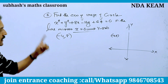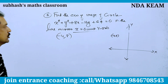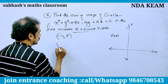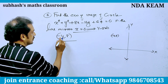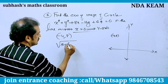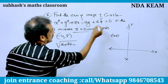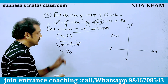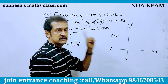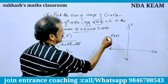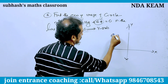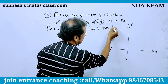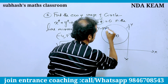The radius squared: root of (−4)² + 16 + 64 minus the constant 64. That cancels, giving radius squared = 16, so radius = 4.